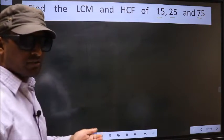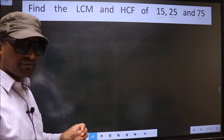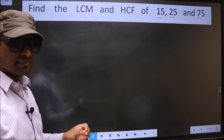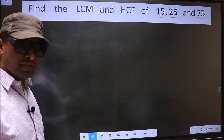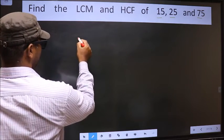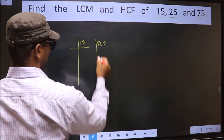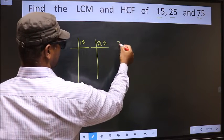To find the HCF and LCM, first we should do the prime factorization of each number separately. That is 15, 25 and 75.